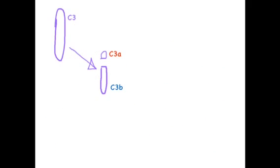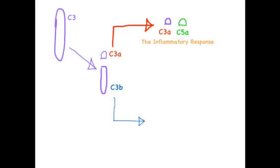From what we've learned, complement protein C3 splits into two parts: a smaller portion C3A and a larger portion C3B. C3A splits off and joins up with complement protein C5A to induce the inflammatory response. The larger portion, C3B, travels towards pathogens and binds to their surface in a process known as opsonization, which we'll discuss later.